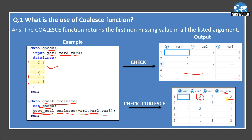In the second observation, variable one itself has a non-missing value, so test_call is one. In the third observation, variable one and variable two both have non-missing values, but COALESCE picks the first non-missing value — variable one — so test_call is one. For the fourth observation where all three variables have missing values, test_call is also missing. For the last observation, variable one and variable two are missing but variable three has value three, so COALESCE returns three in test_call. I hope the COALESCE function is now clear.